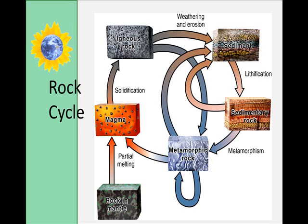The origin of igneous rocks means fire-formed rocks, so they crystallize from molten material. Igneous rocks are defined as rocks formed through volcanic action or derived from a molten mass, which can be magma or lava. Magma is molten rock below the Earth's surface, and lava is molten rock that erupts onto the Earth's surface through a volcano or a crack or fissure. Volcanoes are gaps in the Earth's crust where molten rocks and other materials escape onto the Earth's surface.